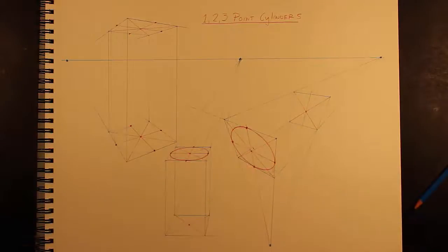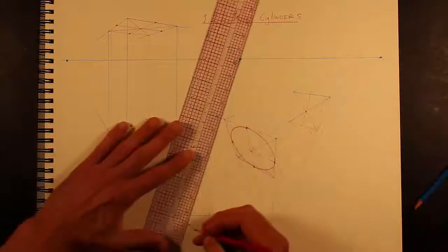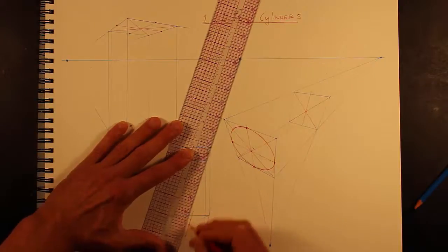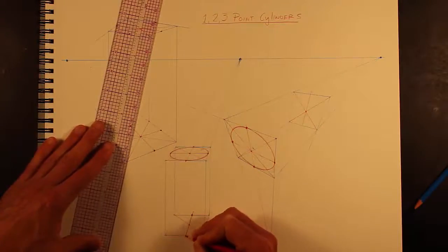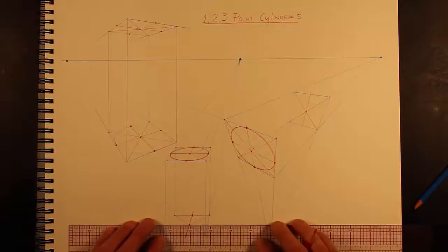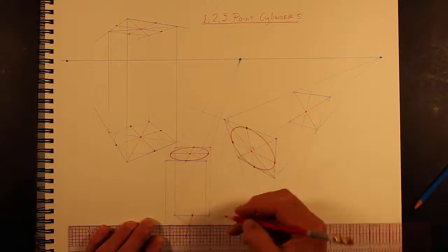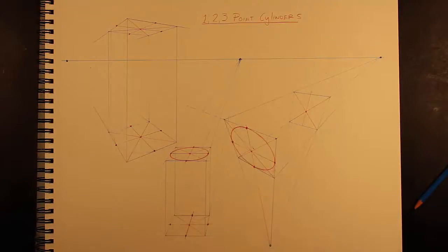When you're doing one point perspective, this one goes through to the vanishing point. That's the points of tangency. And then this is an implicit horizontal, so you just do a horizontal through it, through the center point, and then you get those. Just like that.